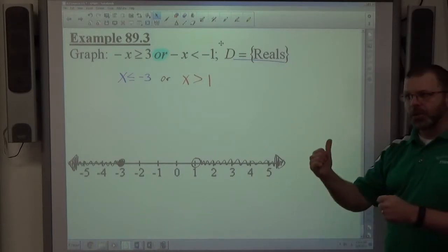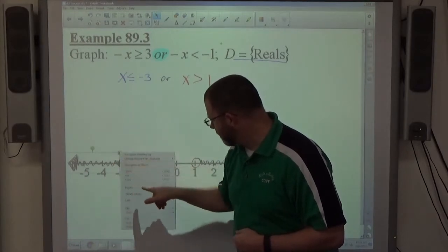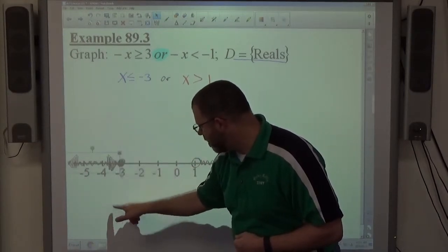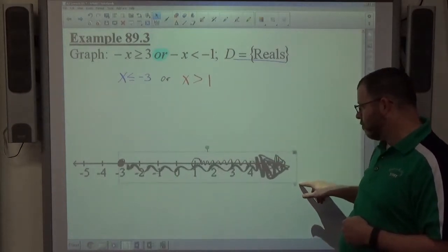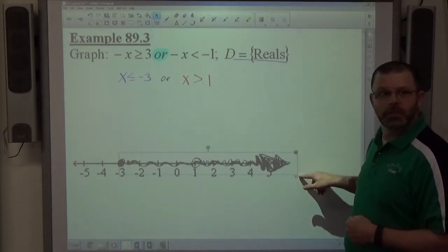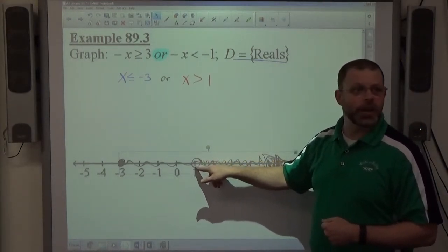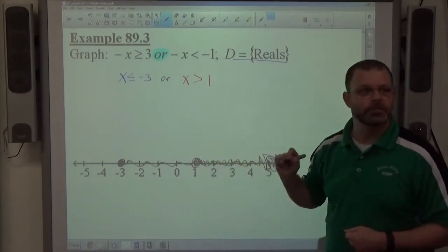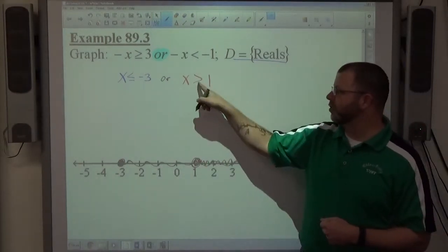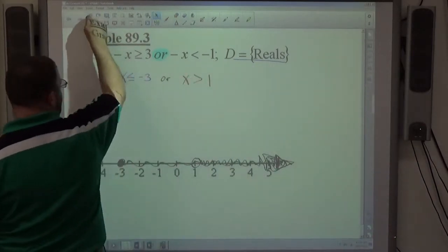If they happen to go in the same direction, suppose this one went this way, like that, right? And that happens. This open circle gets filled in by the shading. So if there was an open circle there, the shading would fill it in. Because even though this isn't true, the other one would have been true. So that is a possibility. That happens occasionally.